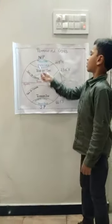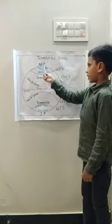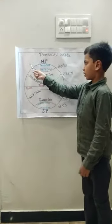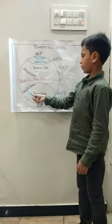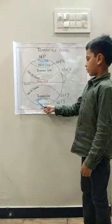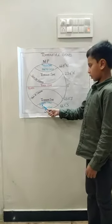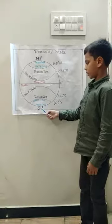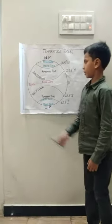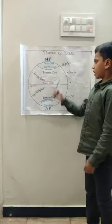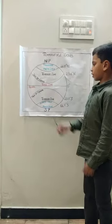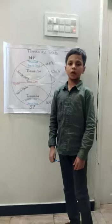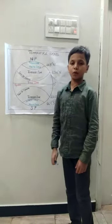Temperate zone. It lies between the Tropic of Cancer and the Arctic Circle in the Northern Hemisphere, and the Tropic of Capricorn and the Antarctic Circle in the Southern Hemisphere. Sunlight here is moderate, so the temperature is neither too hot nor too cold.